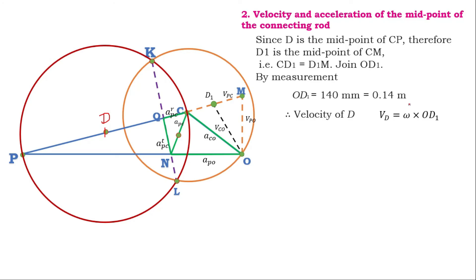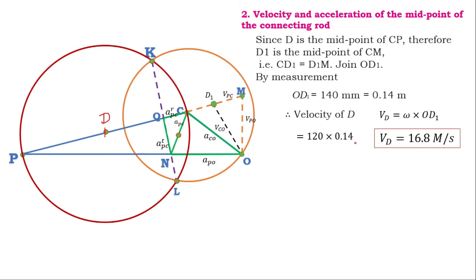Velocity of D equals omega multiplied by the O to D1 distance: 120 × 0.14 = 16.8 meter per second. This is the velocity of the midpoint of the connecting rod.